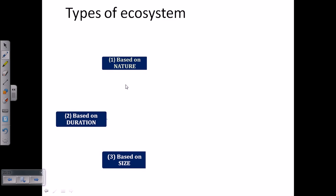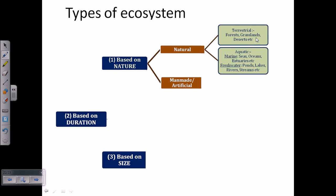So if we classify it based on the nature of that ecosystem, we can divide it into two parts like natural ecosystem and manmade or artificial ecosystem. If you look at the natural ecosystem, we will find terrestrial ecosystem and aquatic ecosystem. Terrestrial ecosystem is very common: forests, grasslands, deserts, etc. It is completely based on the dry lands.